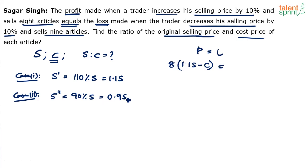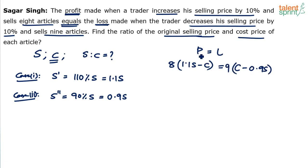What is the loss in the second case? Loss is equal to cost price minus selling price. Cost price is C, and selling price is 0.9S. This was the loss on 9 articles. So profit on 8 articles equals loss on 9 articles: 8 × (1.1S − C) = 9 × (C − 0.9S).